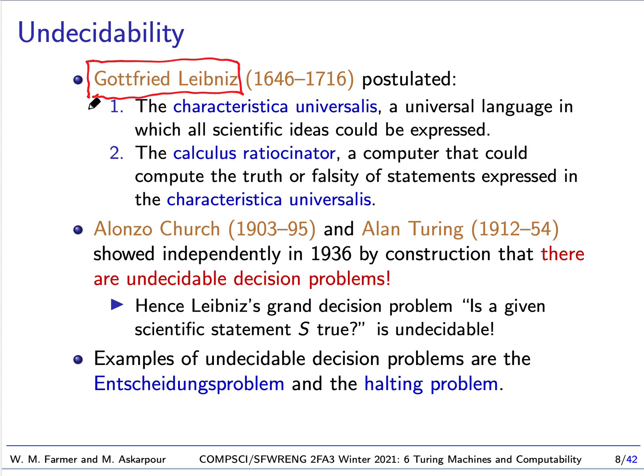The interesting question was: is this an impossibility? No one had an answer for Leibniz for about 200 years, until two logicians — Alonzo Church and Alan Turing — both independently in 1936 showed that there are undecidable decision problems: problems for which we cannot compute the answers. They did this by construction, actually describing decision problems that could not be decided. This shows that Leibniz's grand decision problem — is a given scientific statement true? — is undecidable. It took 200 years to show that Leibniz's dream is not possible.